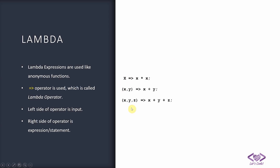On the right side you can see examples wherein x lambda operator x*x — the left side shows one parameter and the right side is an expression in which that parameter is used. Similarly with two parameters, three parameters, and so on — you can use any number of parameters.